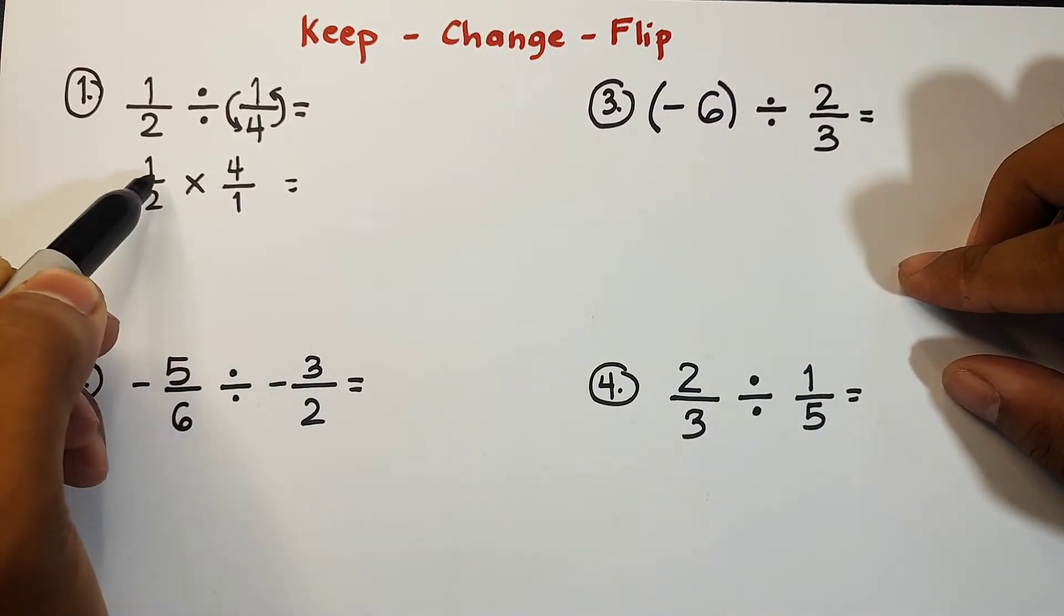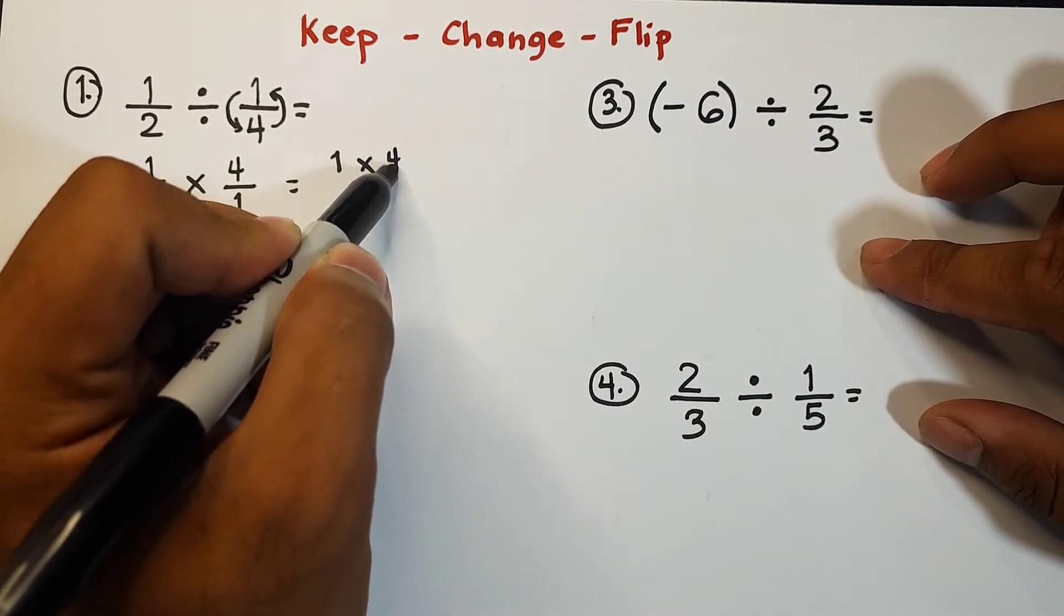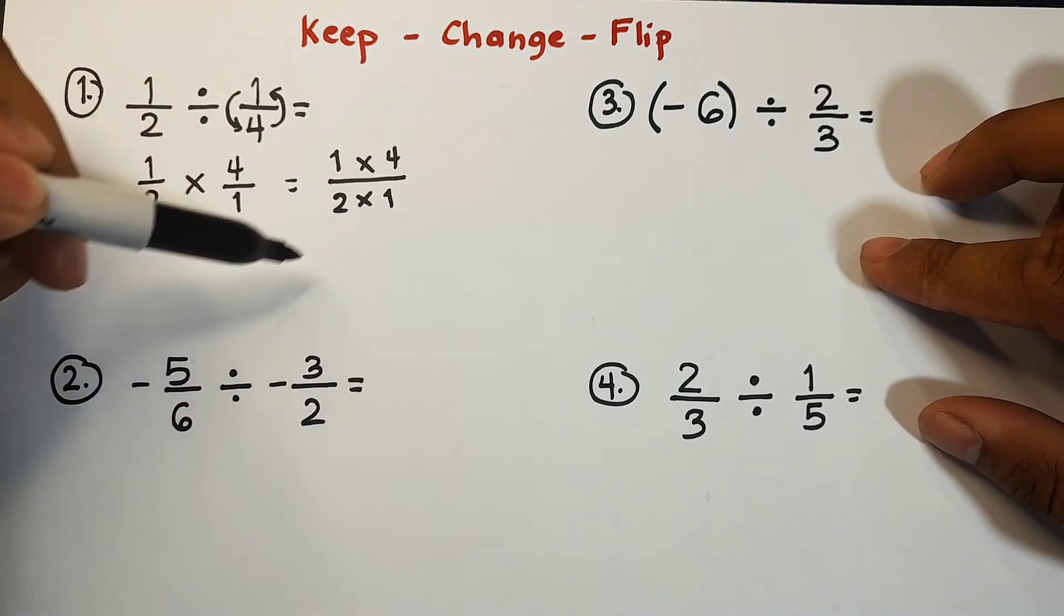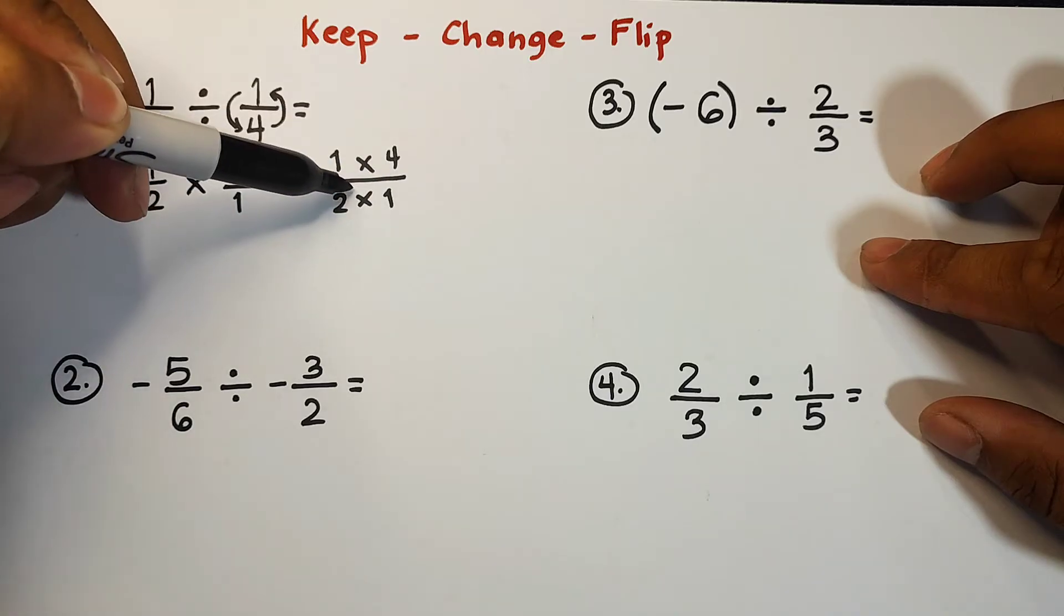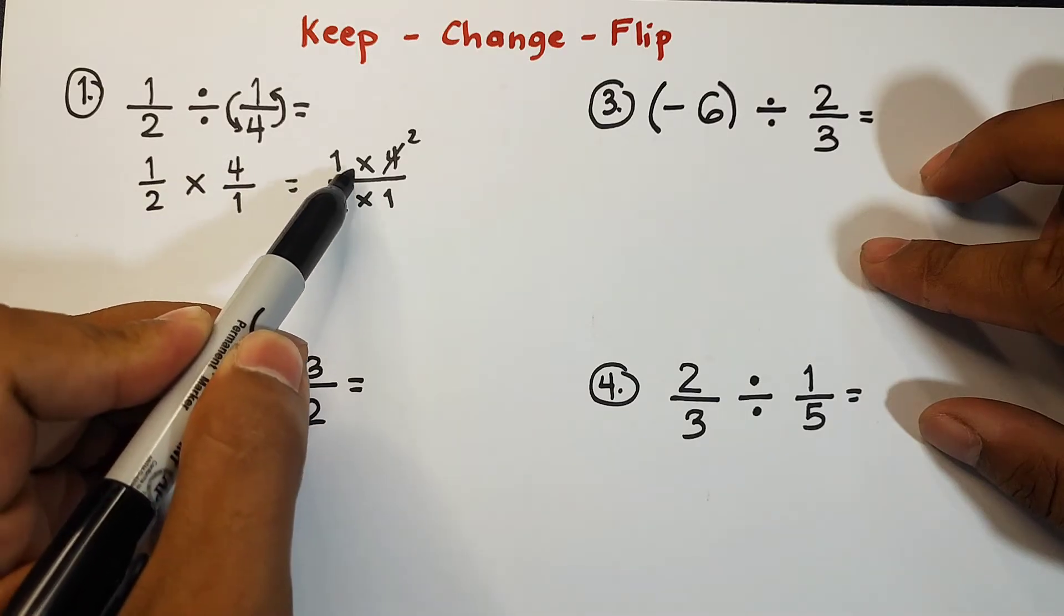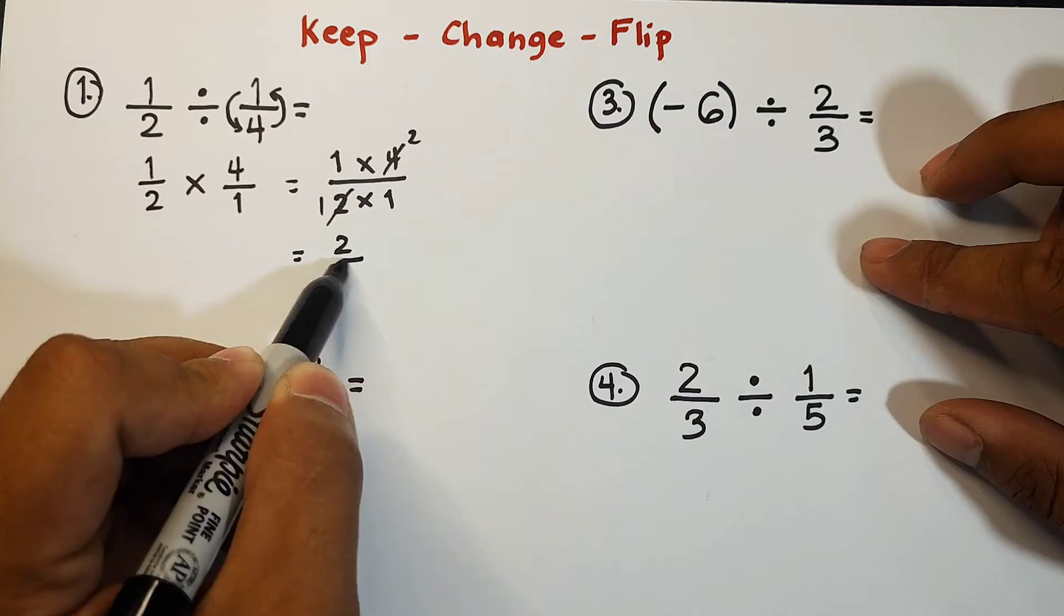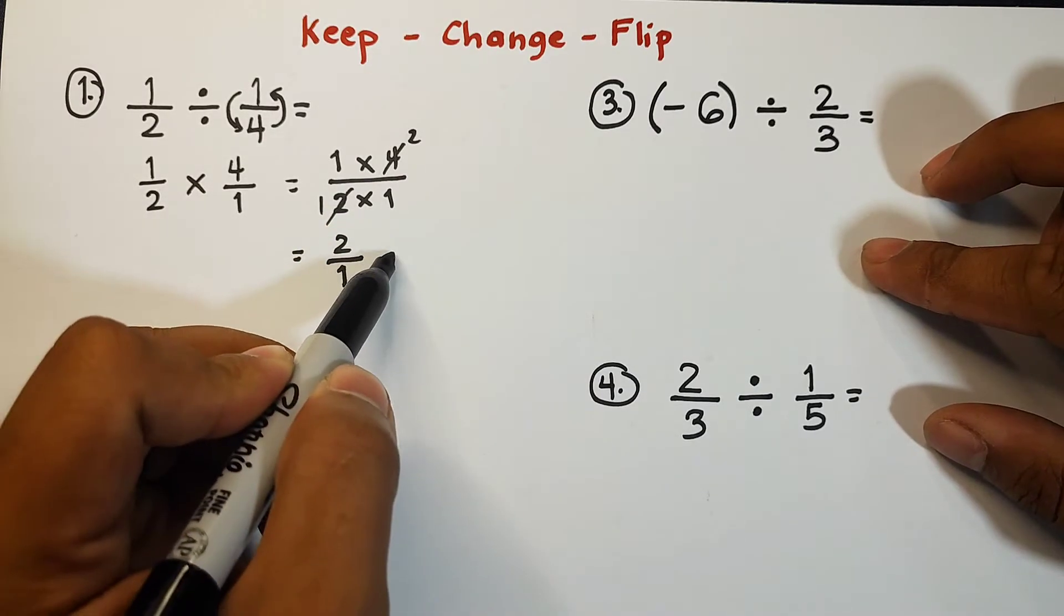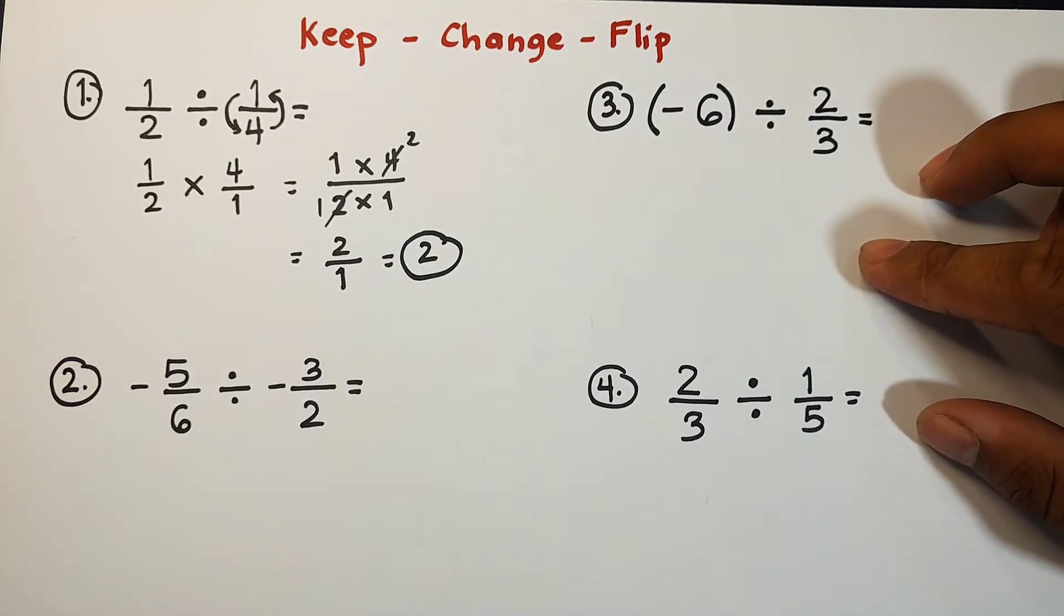So what's next here is that we will multiply the numbers. We have one times four over two times one. So as you can see, we can cancel out four and two. This will become one, and this will become two. So what we have is one times two, which is equal to two, over one times one, that is one. And simplifying two over one, the answer is simply two. And this is the answer for item number one.